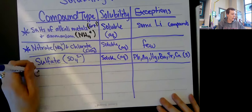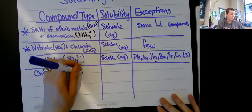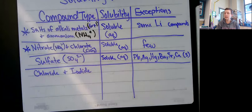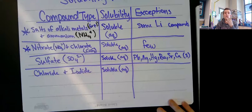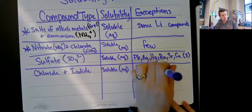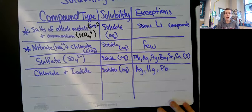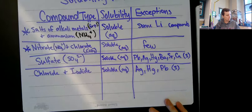Next: chloride and iodide. In the book they just say chloride, but really we could put all the halogens here - anything that ends with a halogen is going to be soluble, meaning aqueous. But there are exceptions for this one too - only three exceptions: silver, mercury, and lead. Those three are not soluble, which means they would be solid if they formed in a reaction.